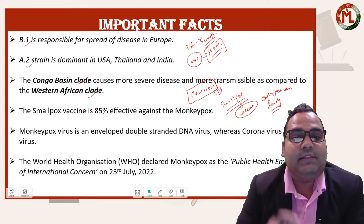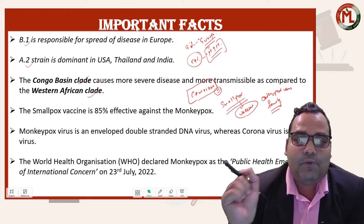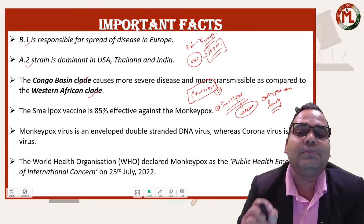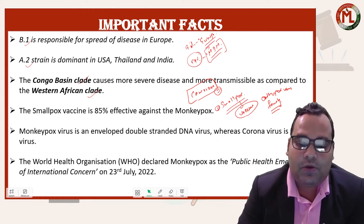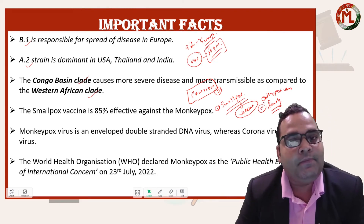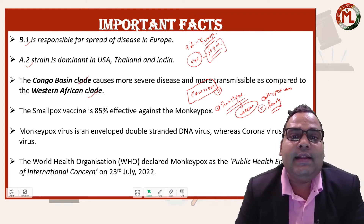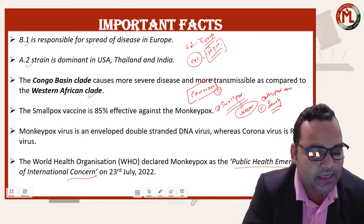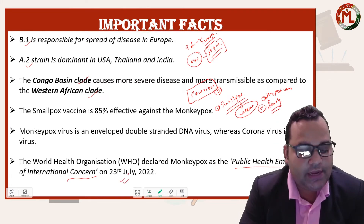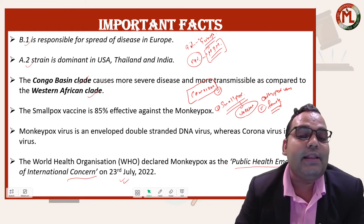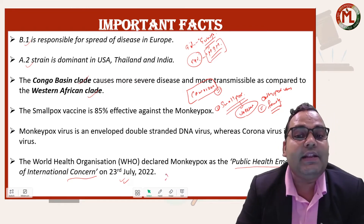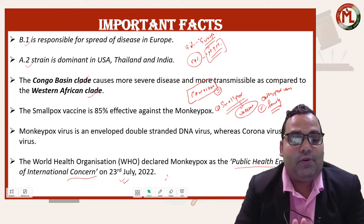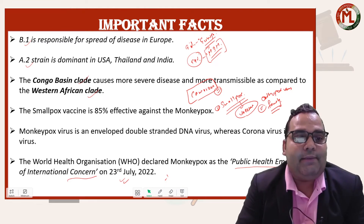Among smallpox and monkeypox, smallpox disease is more severe than monkeypox. However, we can use the smallpox vaccine for monkeypox as well because they are from the same orthopoxvirus family. The WHO declared monkeypox a Public Health Emergency of International Concern on 23rd July 2022, but it has not been declared a pandemic because monkeypox is not spreading as fast as coronavirus and its fatality rate is lower.